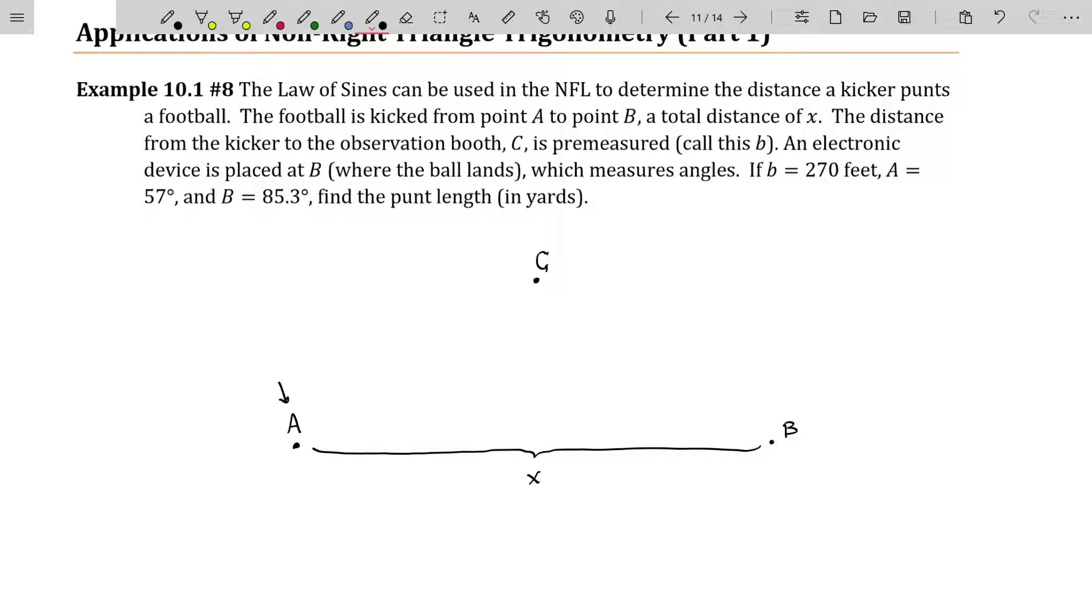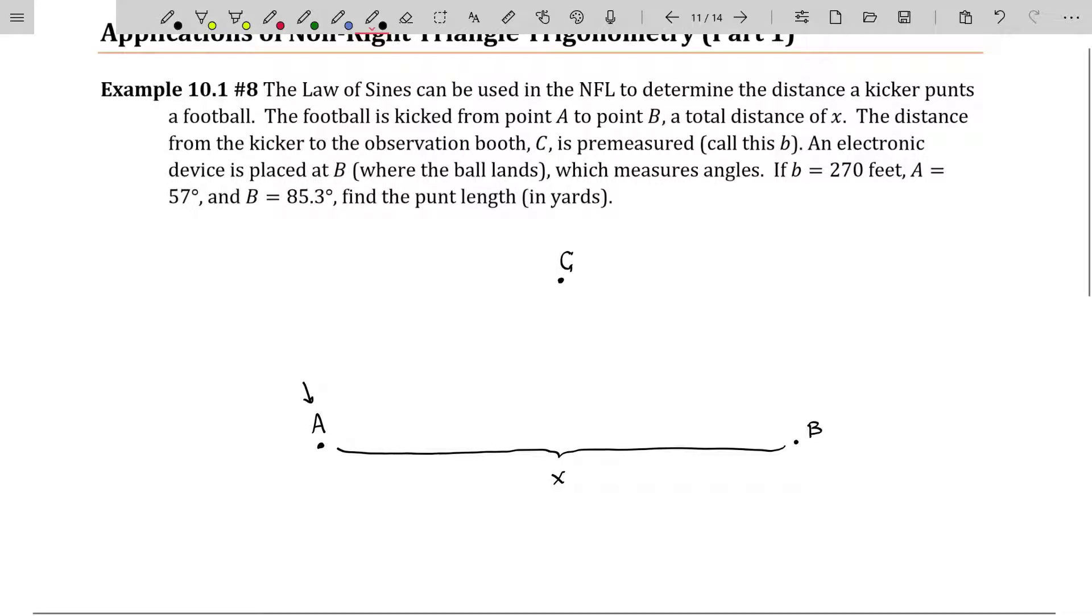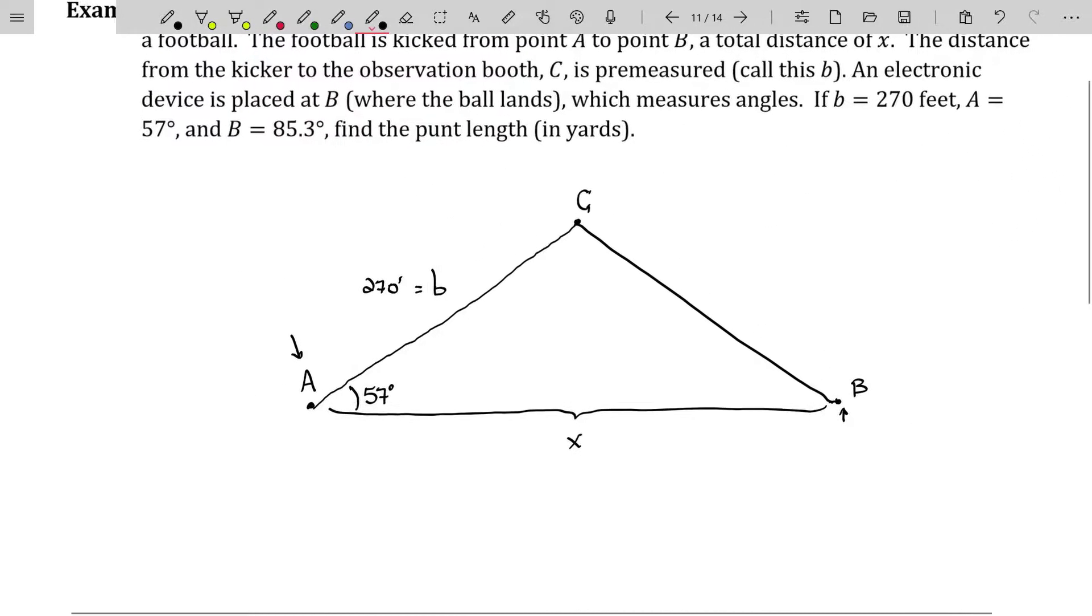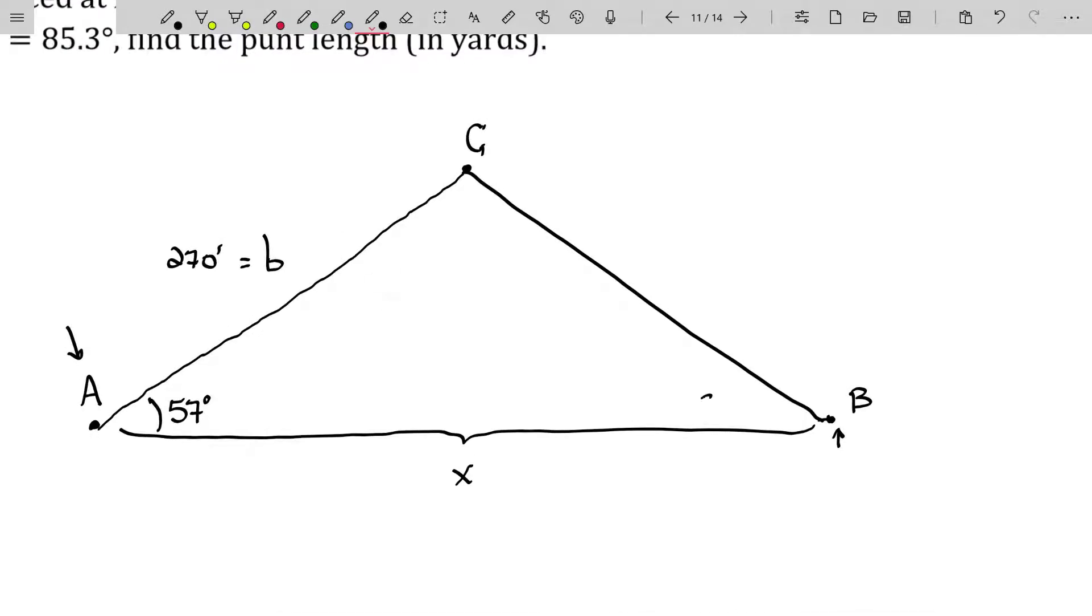There's some observation booth at C. The distance from the kicker to the observation booth is pre-measured. So this distance right here from the kicker to the observation booth is pre-measured. We're going to call that length B because it's opposite the angle B in this triangle. An electronic device is then placed where the ball lands, which measures angles. If B, side B, is 270 feet and angle A is 57 degrees, and angle B is 85.3 degrees, find the punt length in yards.